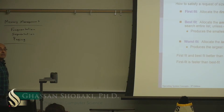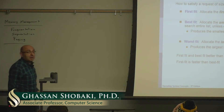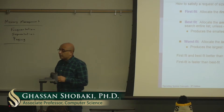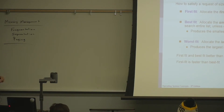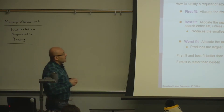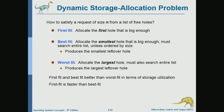Last time we started talking about memory management, so today we will continue that discussion. The three main concepts today are going to be fragmentation, segmentation, and paging. Last time we covered contiguous memory allocation, where each process gets a contiguous block of memory, and we talked about the three different schemes for finding a free block for a process.